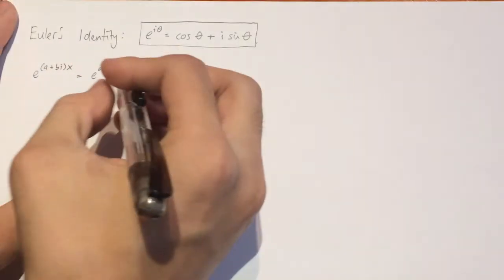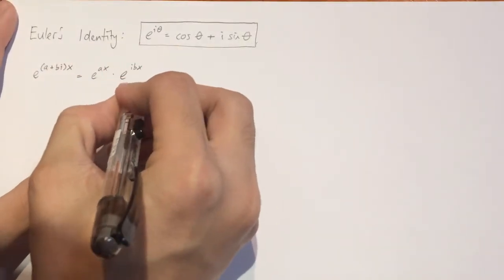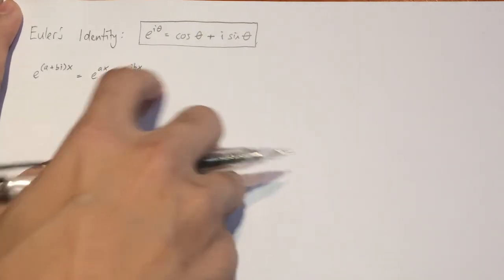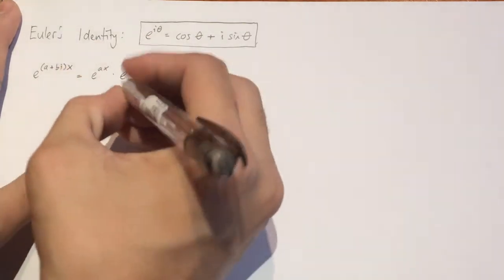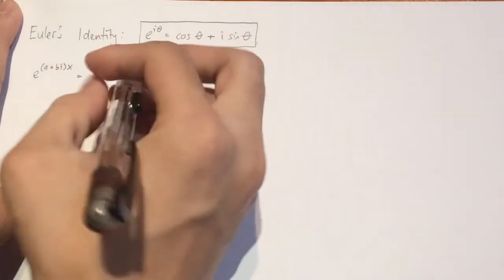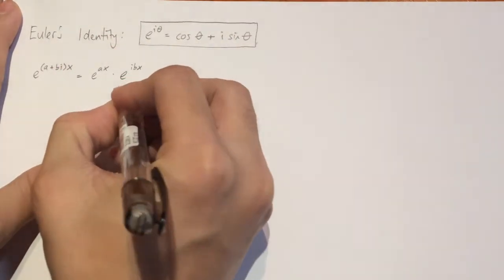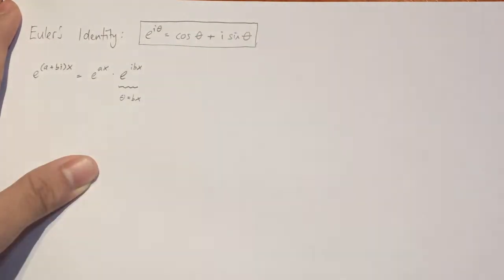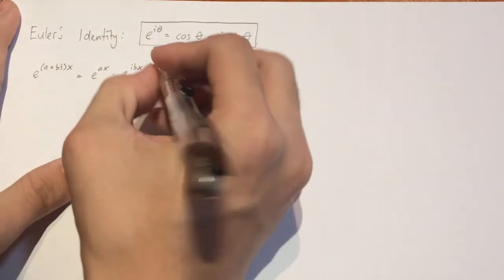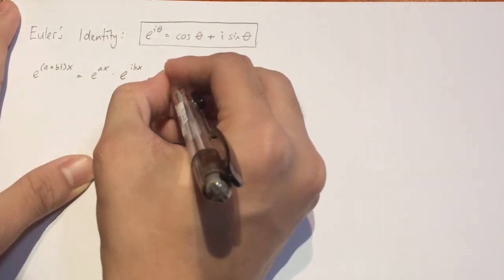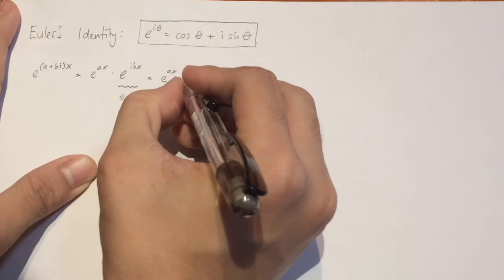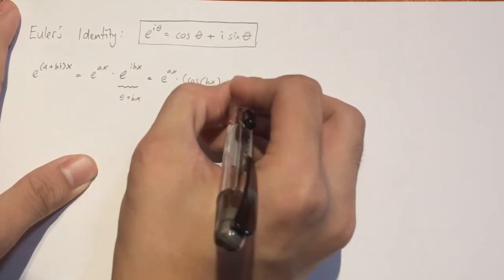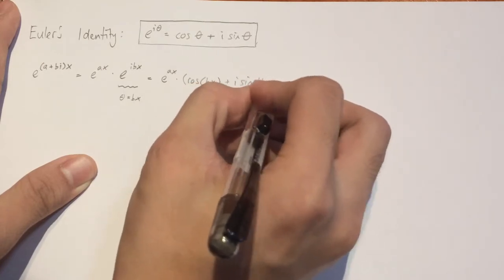So now we can look at this bit here. As you can see, this involves an imaginary power, which is exactly what we have for Euler's identity. So this is the same as above, except we let theta equal to bx. And so we can change this to be in terms of cosine and sine. And it would look like this. It would just be e to the power of ax still, but multiplied by cos of bx plus i sine of bx.